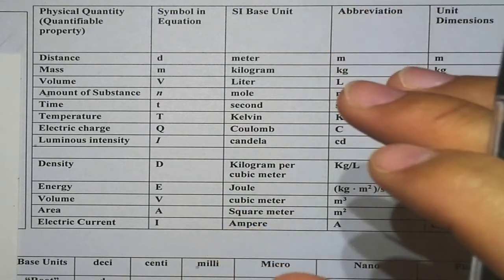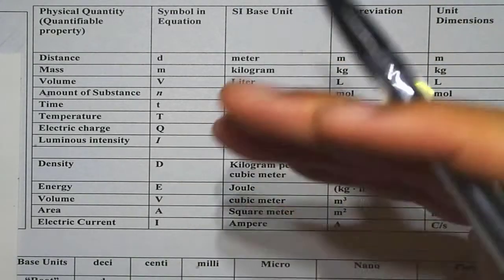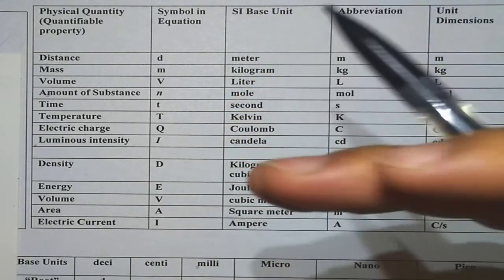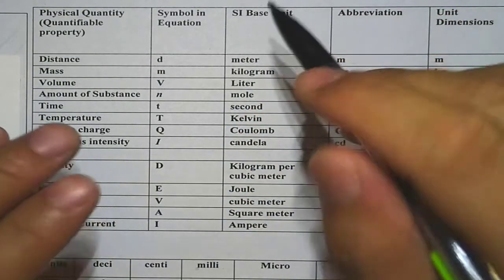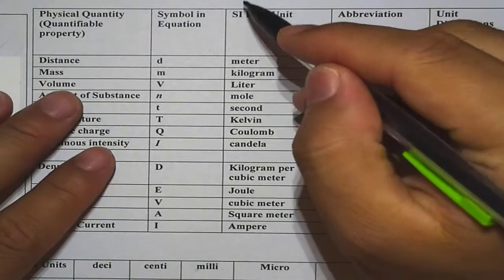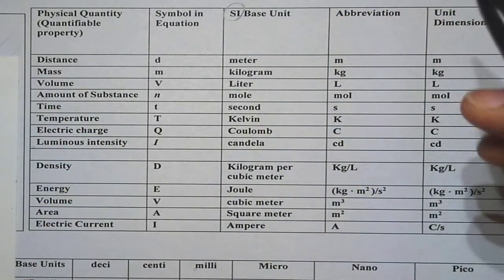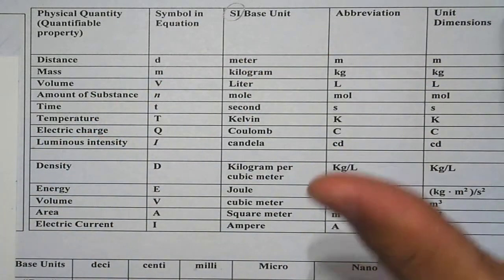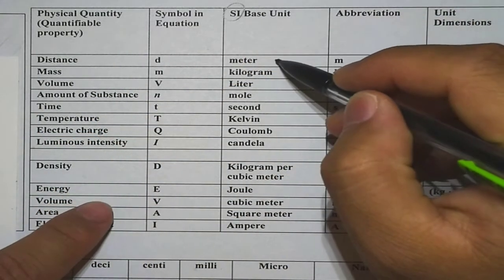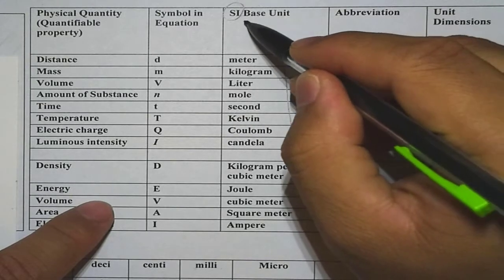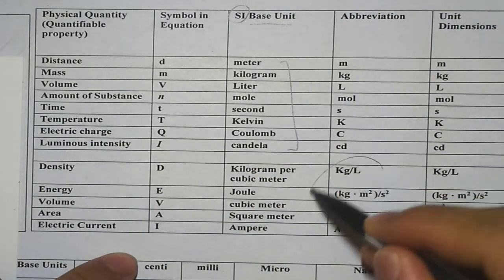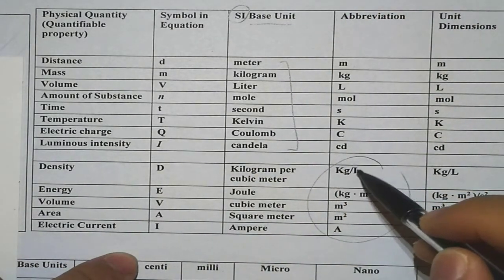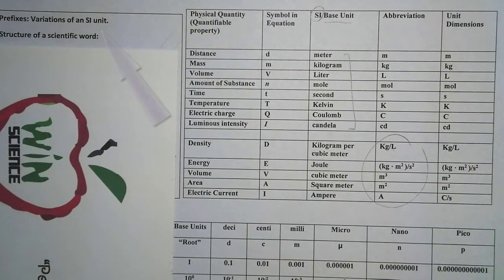In the previous lesson, we learned that our scientists use a system of units called the International System, and the abbreviation for that system is SI. We learned that all the units in the SI system are made from the base units, and there are eight base units. From the base units, we have the derived units that are made of one or more SI base units.